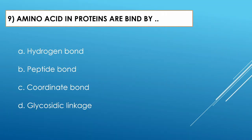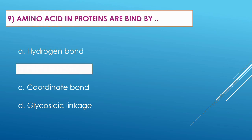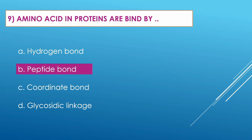Question number nine: Amino acids and proteins are bound by — Option A: hydrogen bond. Option B: peptide bond. Option C: coordinate bond. Option D: glycosidic linkage. The correct option is peptide bond, which helps in amino acid linkage for making protein.